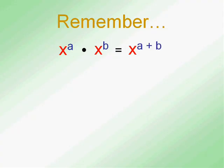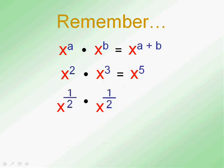Now let's get to things you've perhaps never seen before. Whatever we do has got to follow this rule: x to the a times x to the b equals x to the a plus b. For instance, x to the second times x to the third equals x to the fifth. Now, x to the half times x to the half — what is a half plus a half? It'll be x to the one.